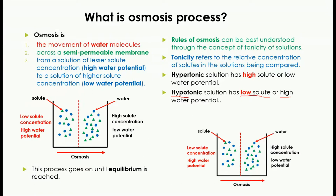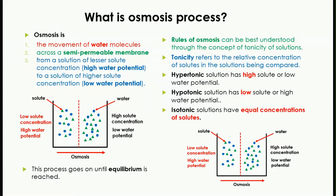The second terminology is hypotonic solution. Hypotonic means that solution has low solute concentration or high water potential. Here, this solution has low solute concentration and high water potential as compared to the other one. Always remember these terminologies are comparing two solutions — one is hypertonic and the other is hypotonic. The third terminology is isotonic solution. Iso means same, so when the two solutions being compared have equal concentrations of solute and equal numbers of water molecules, they are called isotonic solutions. That was all about the osmosis process.